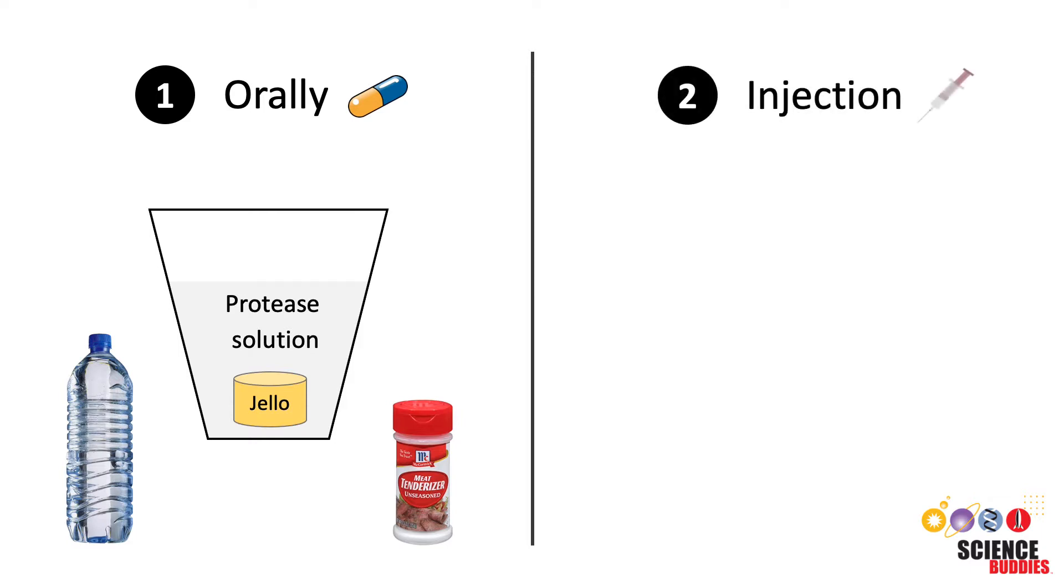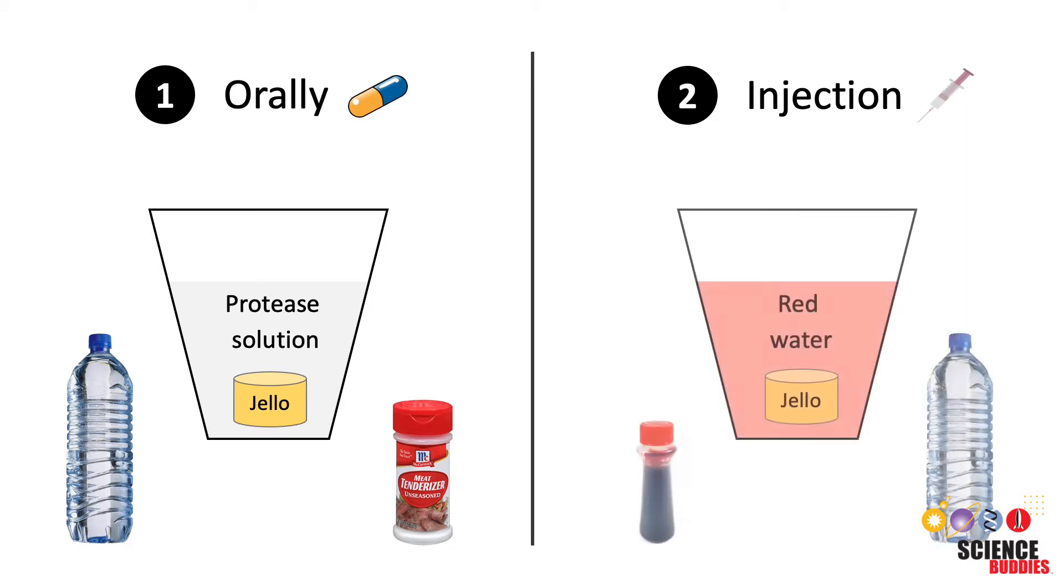The second jello treatment simulates what happens to the insulin when it is injected into the body, where it gets absorbed directly into the bloodstream. In this simulation, a red-colored water solution represents the blood in our bloodstream. Now that you know how the model works, you can start doing the experiment.